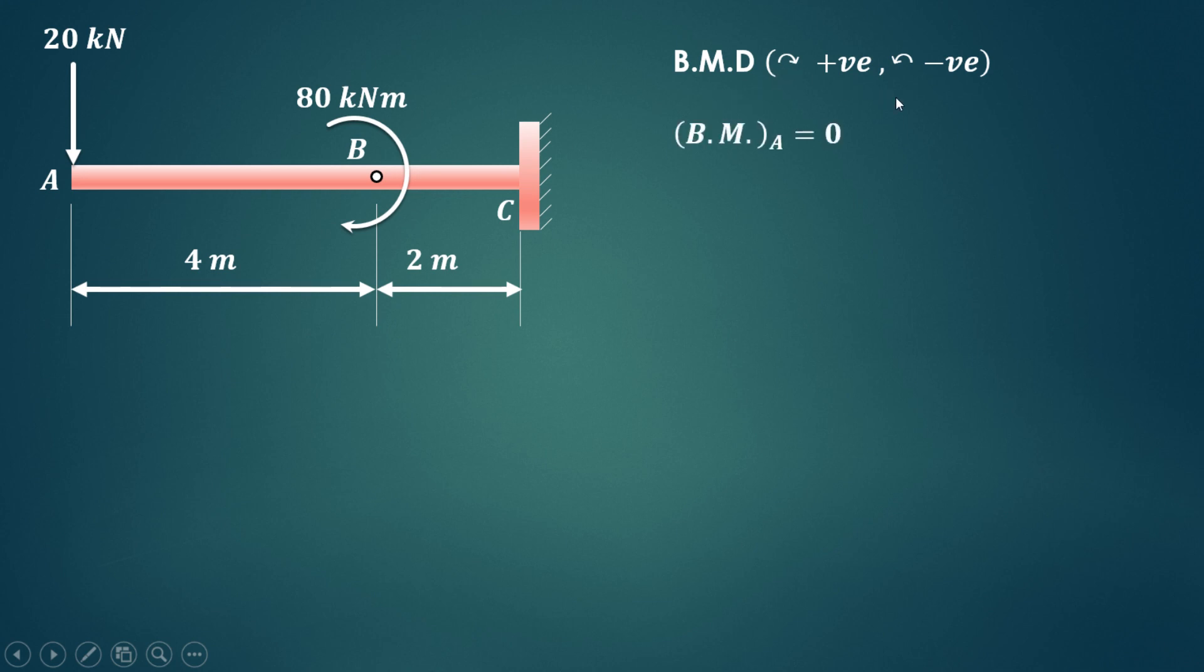At free end, that is at point A, the bending moment will be zero. Then the important part: just at the left of B we have to consider all the forces which are acting on the left hand side of B.